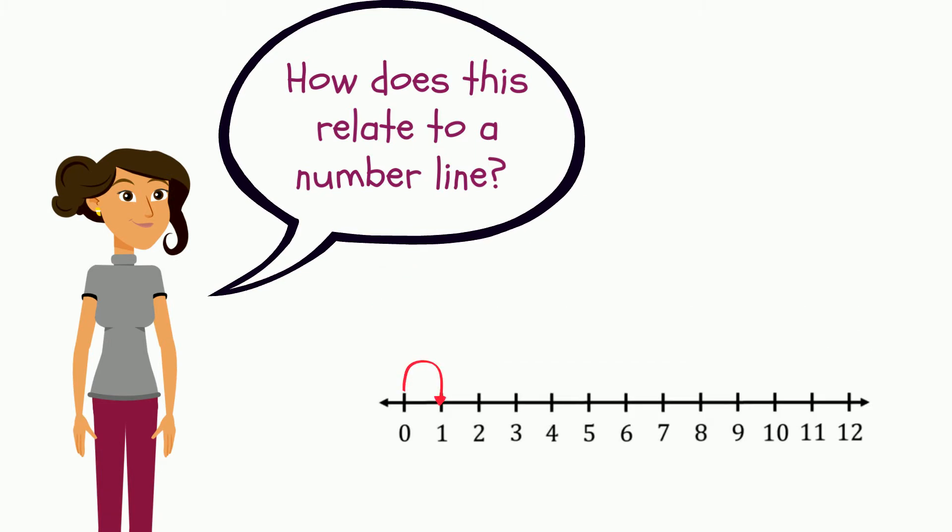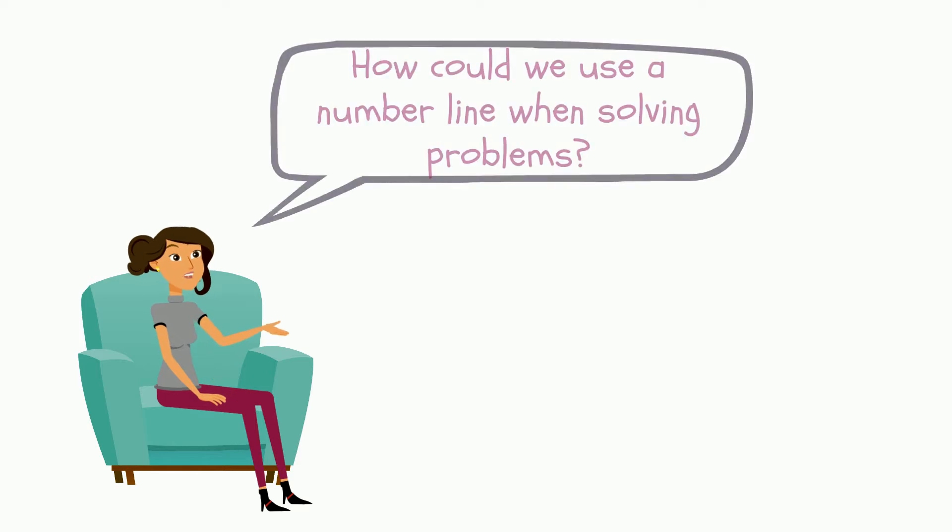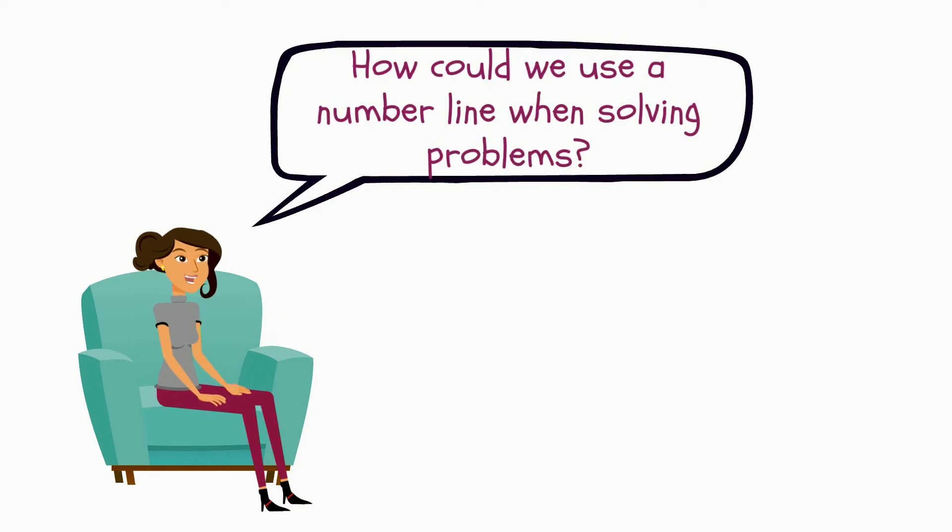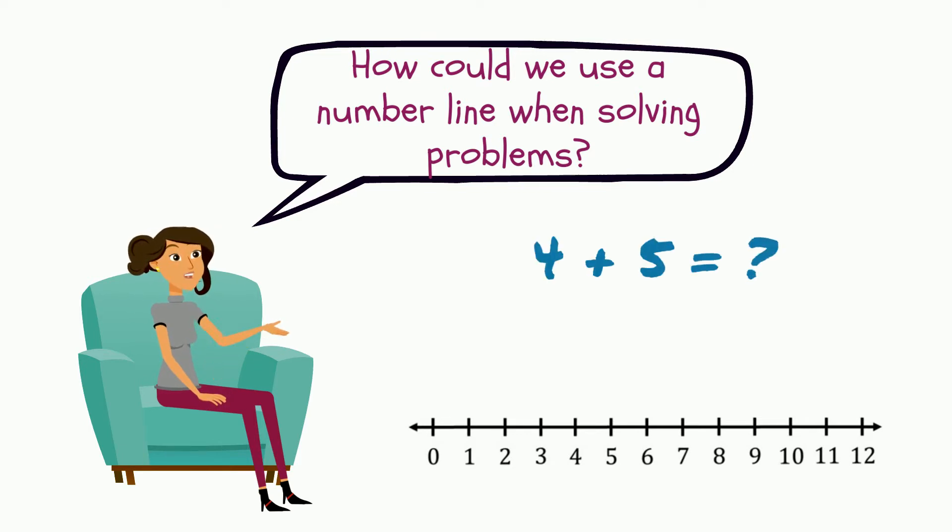Let's talk about how we could use a number line when solving word problems that involve length. Earlier, I measured my two pencils. One was 4 inches and the other was 5 inches long. I can begin at 0 on the number line and add 4 spaces. Then, I can jump another 5 to show that I was adding. My answer is 9.